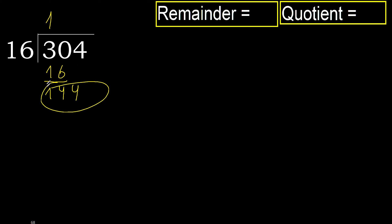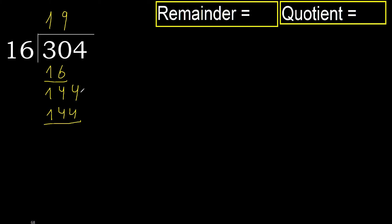144. 16 multiplied by 9 is 144, not greater. Subtract. That is not a number, therefore finished.